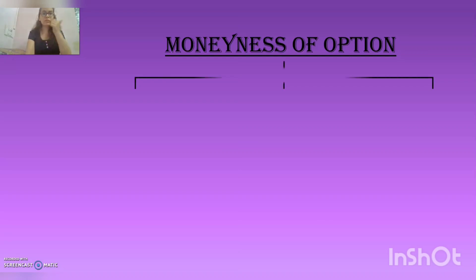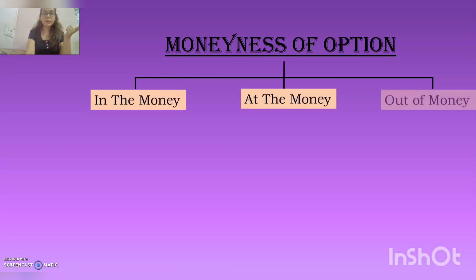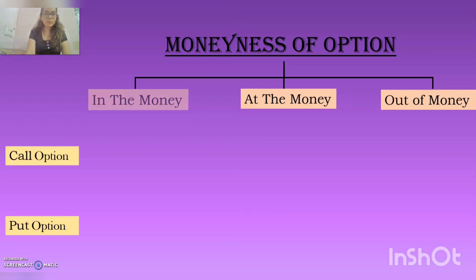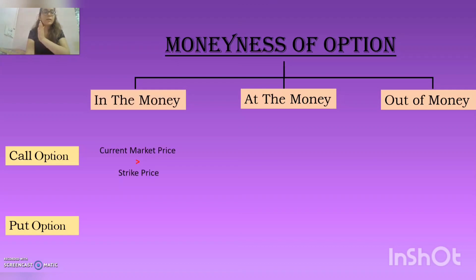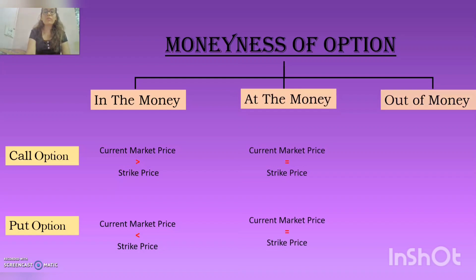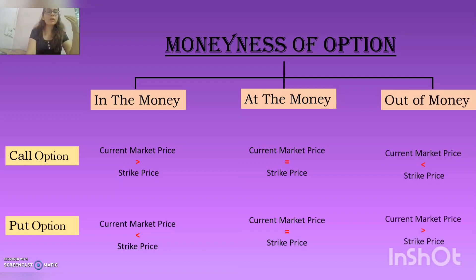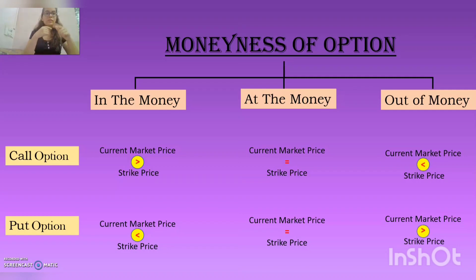Now let's compare moneyness for call and put options together. For 'in the money': in a call option, the current market price is more than the strike price, whereas in put it is less than the strike price. For 'at the money,' it is the same in both cases — current market price equals strike price. For 'out of the money': in a call option, the current market price is less than the strike price, whereas in put options it is more than the strike price. So in 'in the money' and 'out of the money,' the relation between strike price and current market price is opposite for calls and puts.